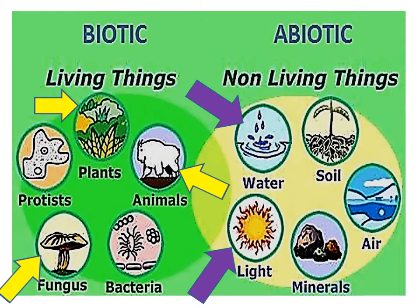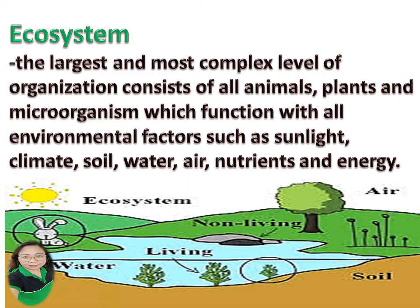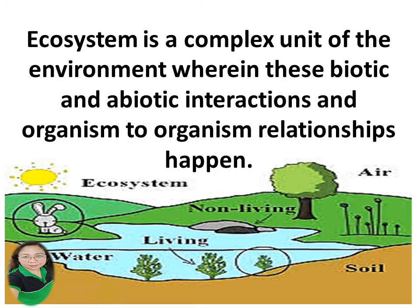Now, what is an ecosystem? An ecosystem is the largest and most complex level of organization. It consists of all animals, plants, and microorganisms which function with all environmental factors such as sunlight, climate, soil, water, air, nutrients, and energy. It is also a complex unit of the environment wherein biotic and abiotic interactions and organism-to-organism relationships happen.